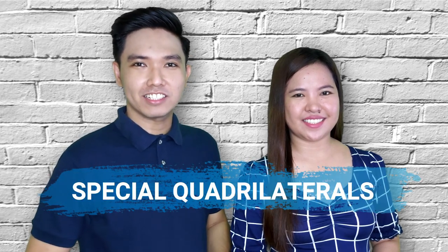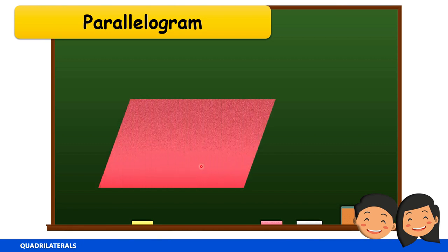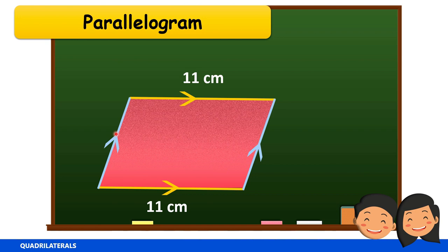The first type we're going to talk about is a parallelogram. A parallelogram has two pairs of congruent and parallel sides. For example, this pair of opposite sides are parallel and congruent — if one side measures 11 centimeters, the other side also measures 11 centimeters. Similarly, if this side is 7 centimeters, the opposite side is also 7 centimeters.